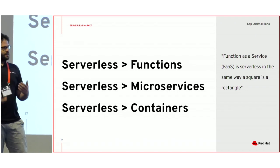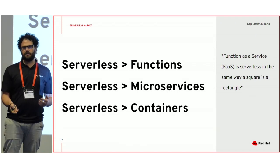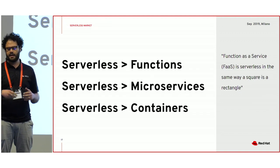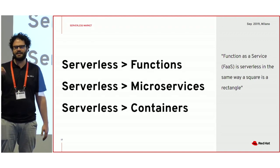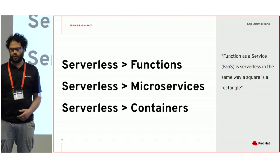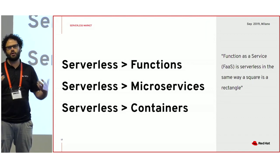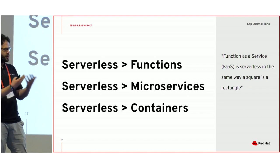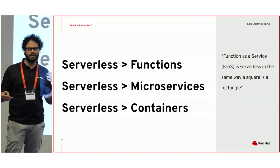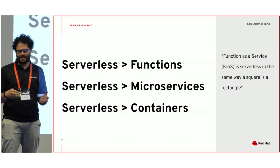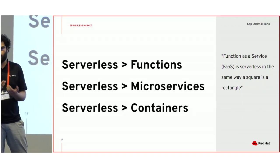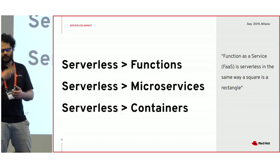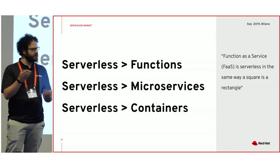If you have some kind of variable workload — like dispatching files, or basically any application that does nothing for 80% of the time and then has a work peak — that fits very well into the serverless scenario. There is also a bit of confusion between serverless and function as a service. Serverless as a concept is broader than function as a service. Saying FaaS is serverless is like saying a square is a rectangle — there's some relationship, but it's not complete. Knative will provide a broad ecosystem of building blocks in which you can run many different kinds of workloads in a serverless mode.